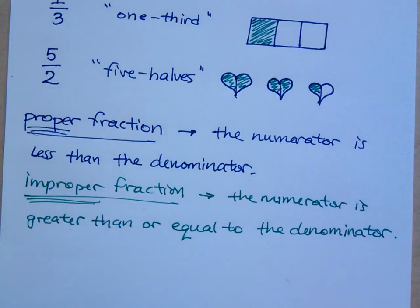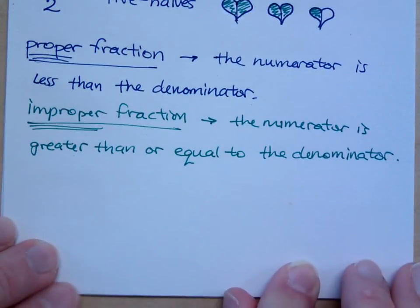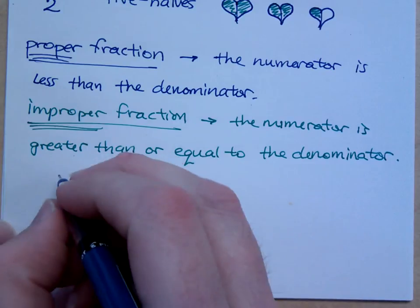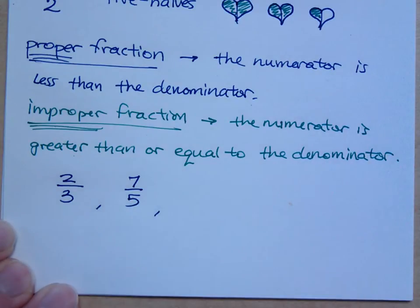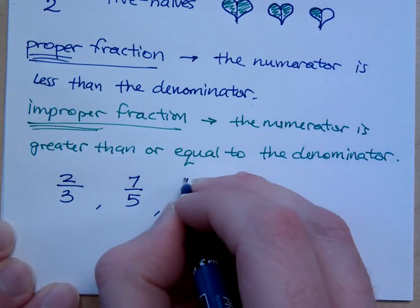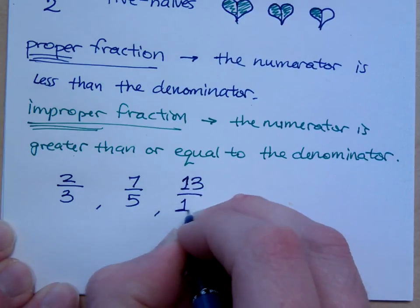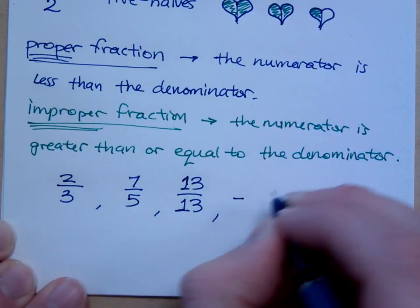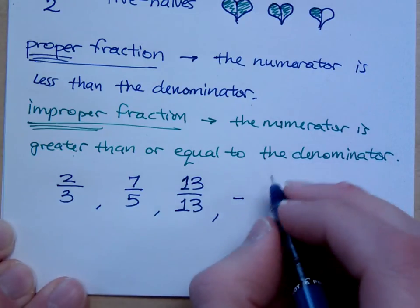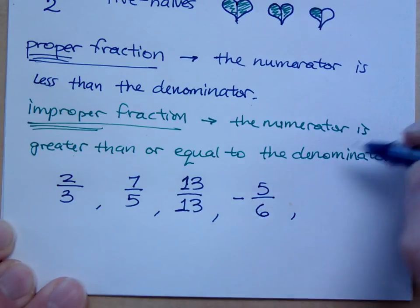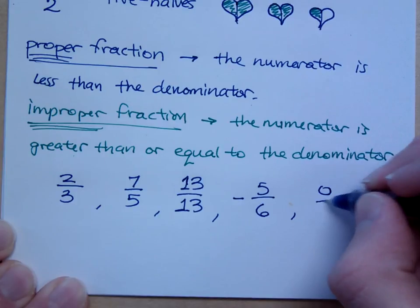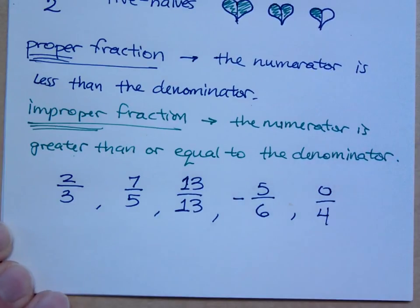So a proper fraction is where the numerator is less than the denominator. So if I were to give you just a list of fractions right here, if I were to say I've got two-thirds, seven-fifths, thirteen-thirteenths, negative five-sixths, and let's say zero-fourths. See if you can label these as proper or improper.